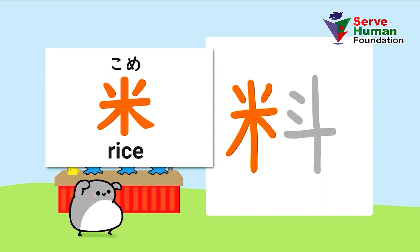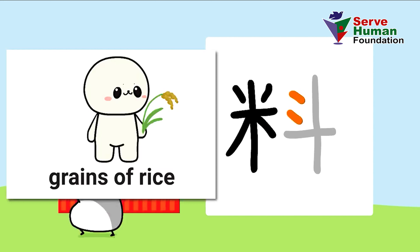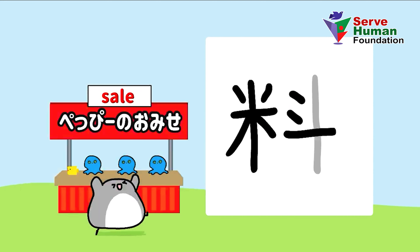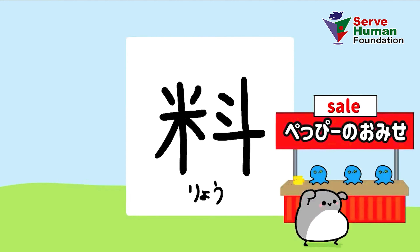This is kanji kome meaning rice. This is grains of rice. And this is kanji jiu meaning ten. This kanji is ryo.